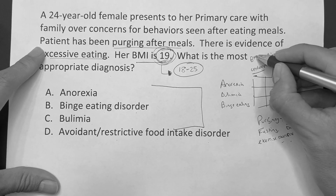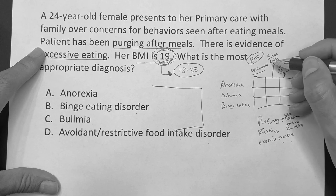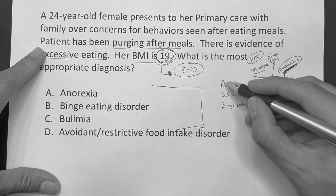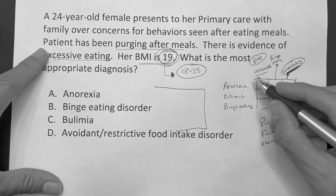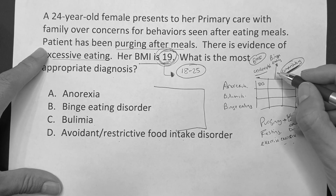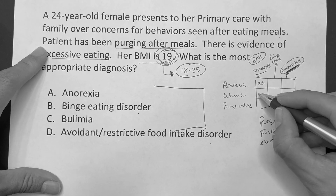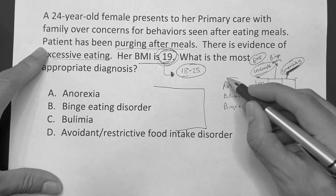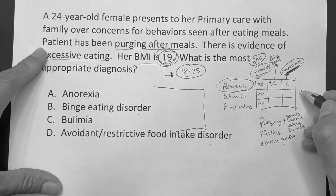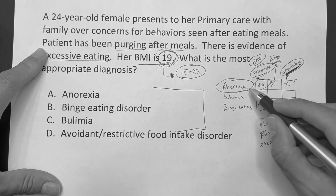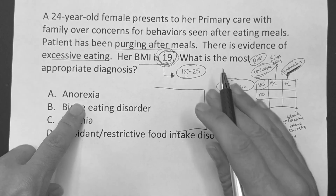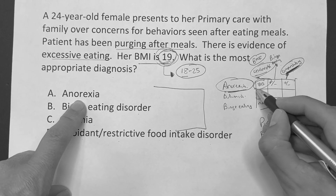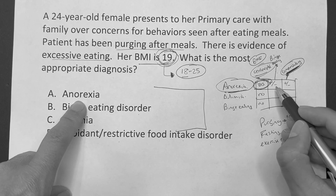If you know their BMI and whether they're binge eating — which is just excessive eating beyond normal amounts within a normal time period — and whether there's a compensatory mechanism, you can differentiate anorexia, bulimia, and binge eating. For anorexia, the BMI is less than 18. Anytime on Step exams I see a BMI less than 18, I'm going with anorexia. With anorexia, the binge eating and compensatory behaviors could or could not be present — they don't have to be there to meet criteria. The only key with anorexia is BMI.